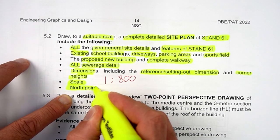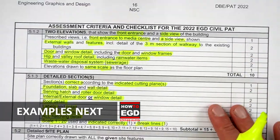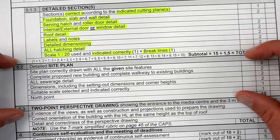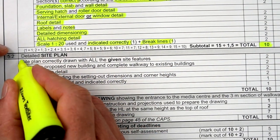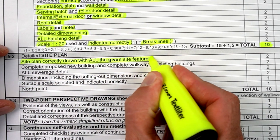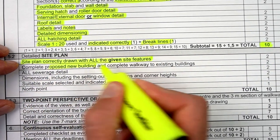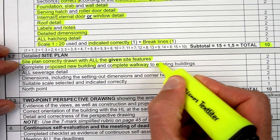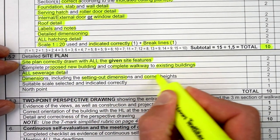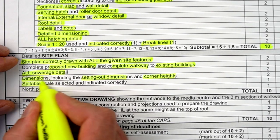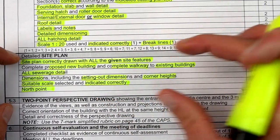This all corresponds with the checklist on page 16 at section 5.2. You'll see the exact same requirements: the site plan correctly drawn with all given site features from your PAT document, the proposed new building, complete walkway to existing buildings, all sewer details, dimensions, setting-out dimensions, corner rights, a suitable scale indicated correctly, and the north point. Getting all of that done correctly according to the standards will give you a 10 out of 10, guaranteed.